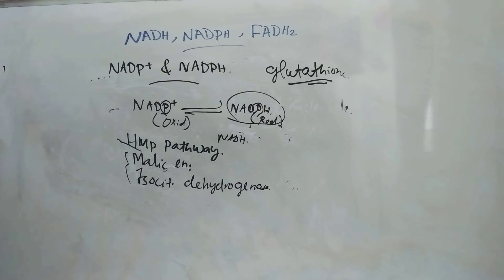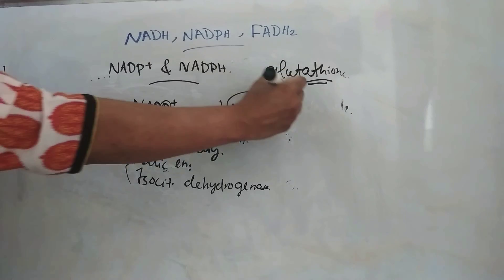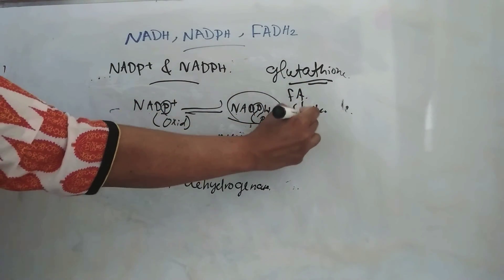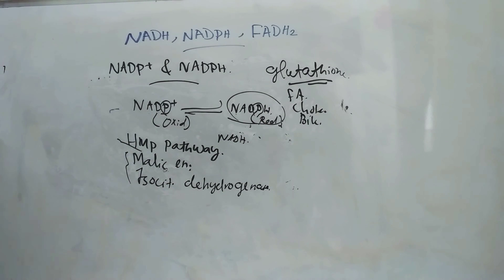It is also used in anabolic pathways like fatty acid synthesis, then cholesterol synthesis, bile acid synthesis, then steroid synthesis, etc. That is the anabolic pathways.